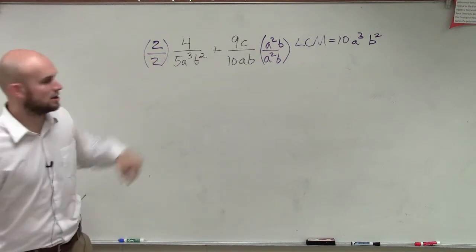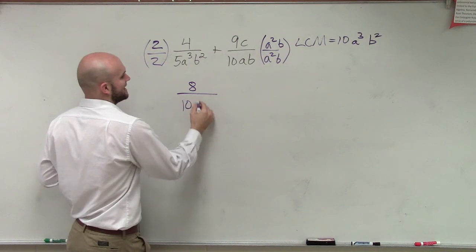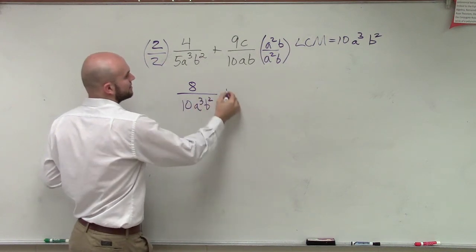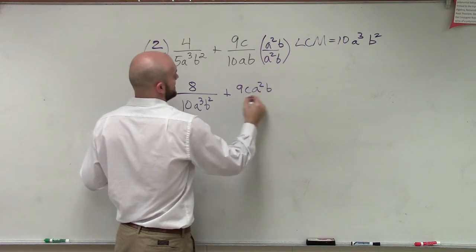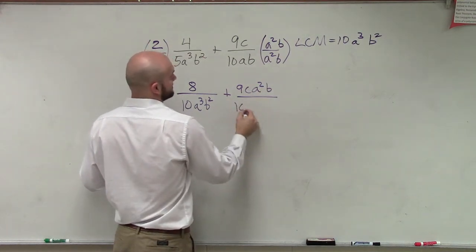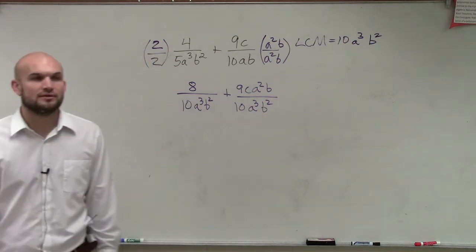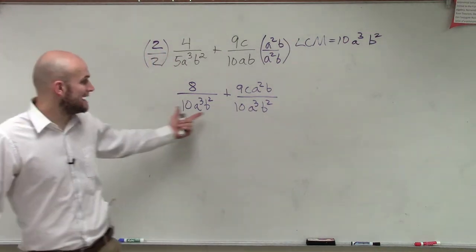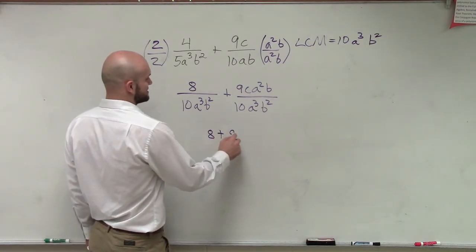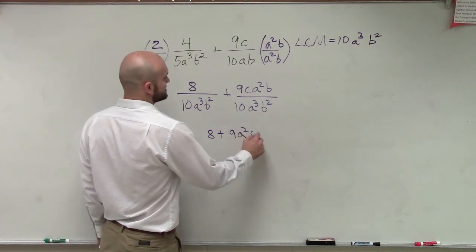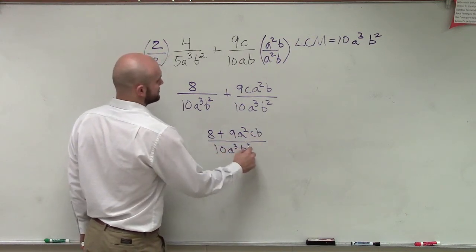True. So, now, I multiply across from these. So, I have 8 over my LCM, which is 10A cubed B squared, plus 9C A squared B divided by 10A cubed B squared. Now, remember, now we can combine, now my denominators are exactly the same. So, I can write this as 8 plus 9A squared CB, I'll just rearrange that a little bit, divided by 10A cubed B squared.